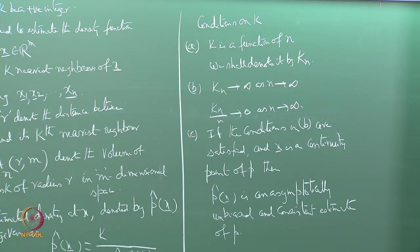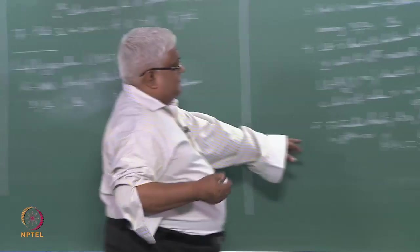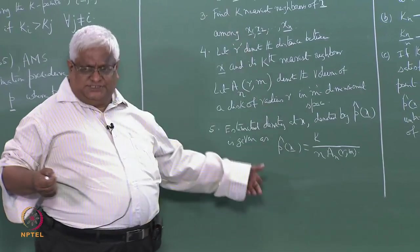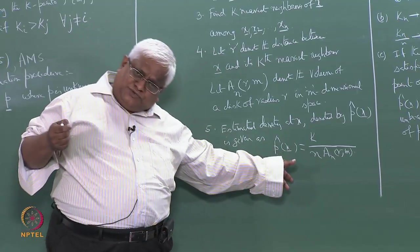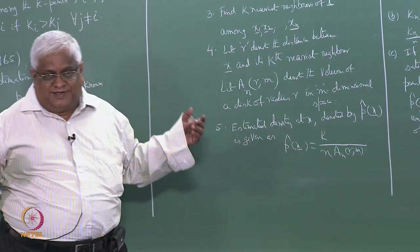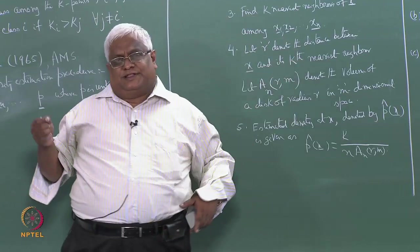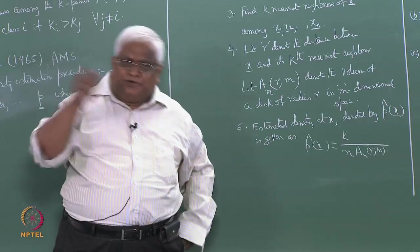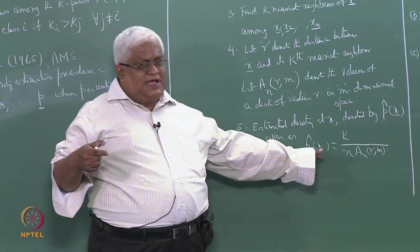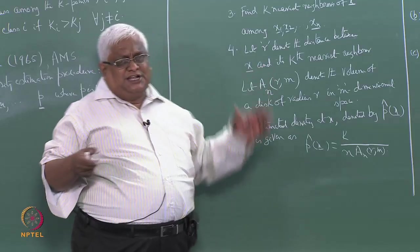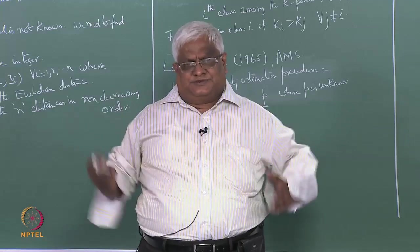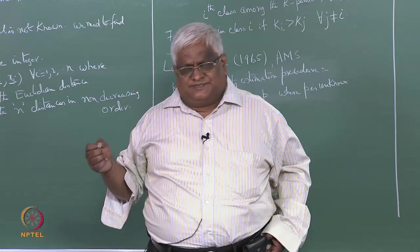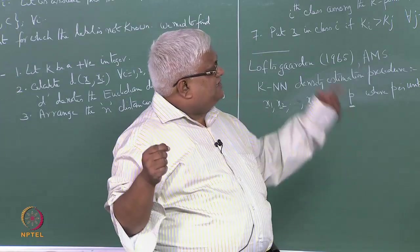Asymptotically unbiased means the expected value of p-hat(x) goes to the actual value p(x) as n goes to infinity. Consistent means the difference between p-hat and p gets reduced as n goes to infinity. This is the density estimation procedure given in 1965.